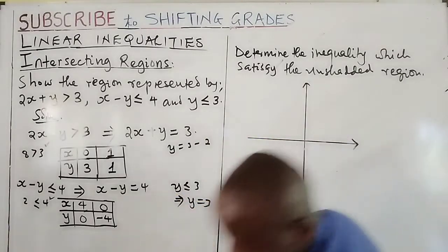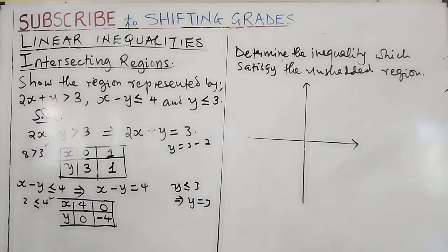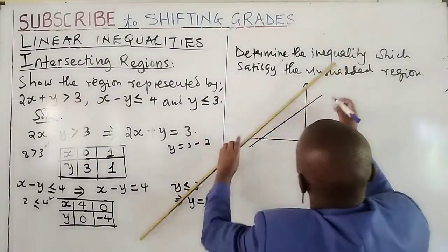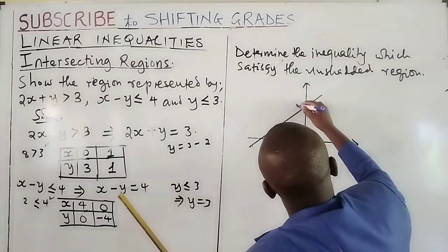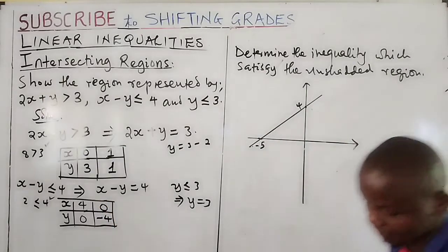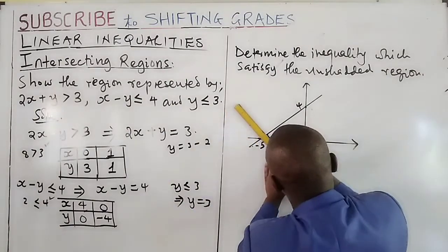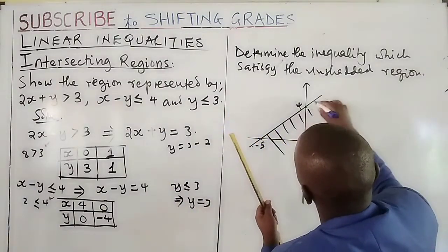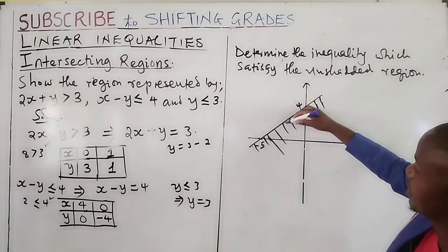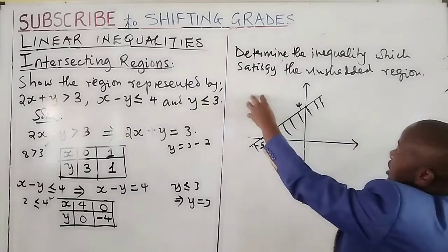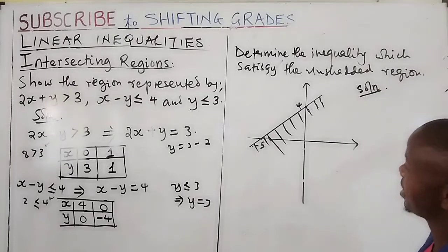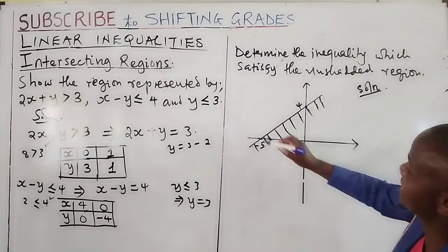A Cartesian plane is given with a complete line cutting through (4, 0) on the x-axis and (0, -5) on the y-axis. The shaded side is identified on one side of this complete line. We are asked to determine the inequality which satisfies the unshaded side. To solve this, we already have the x-intercept and y-intercept from the graph.